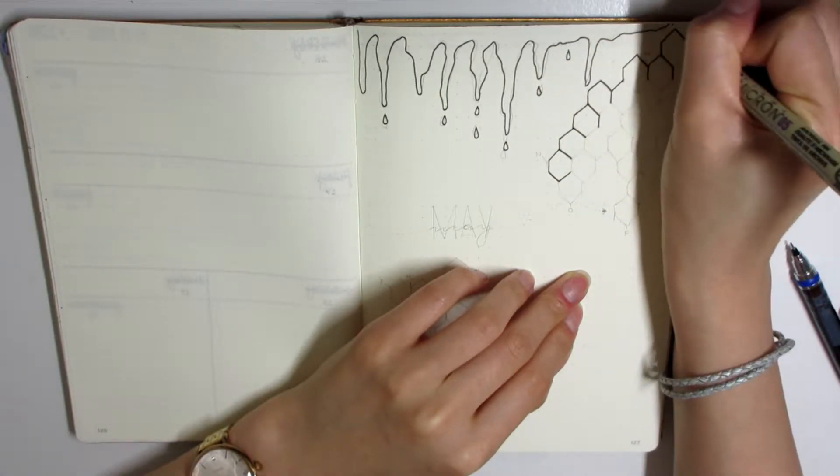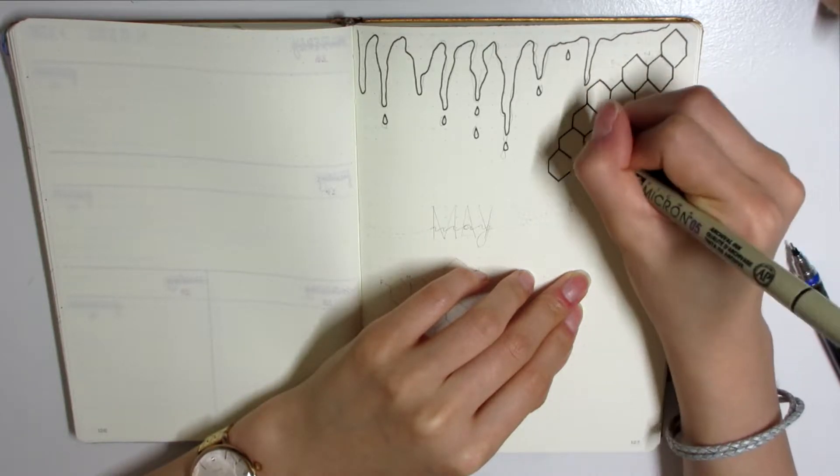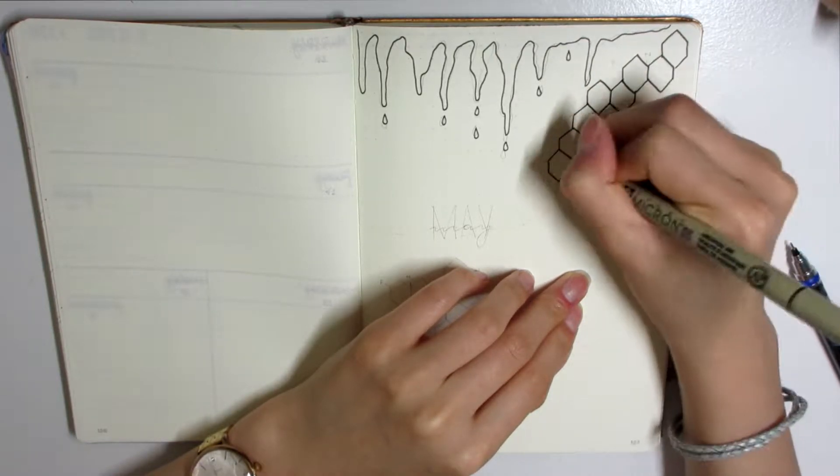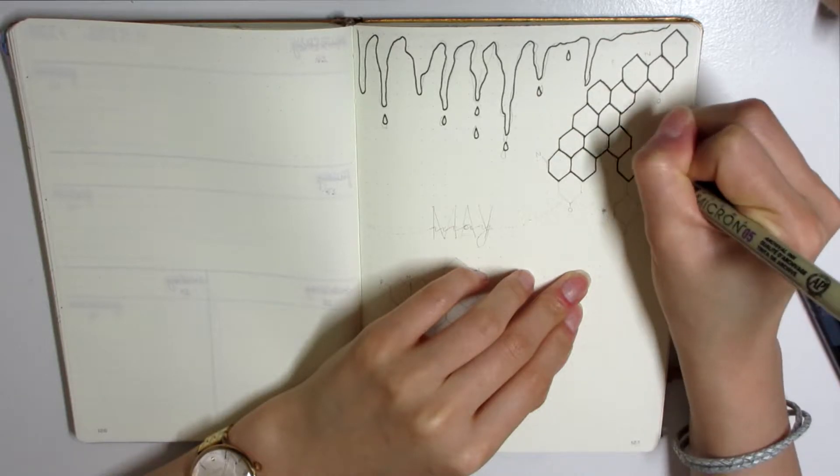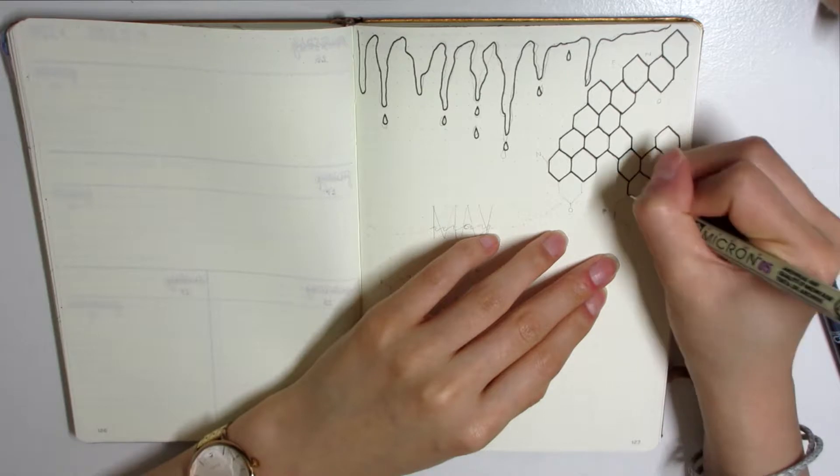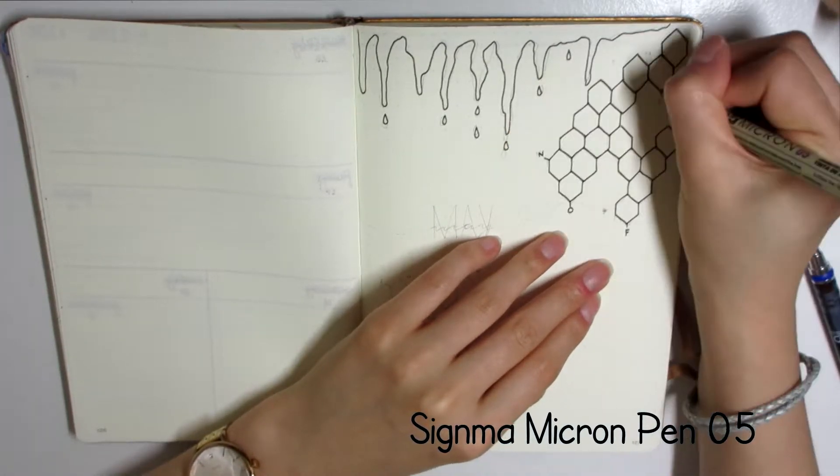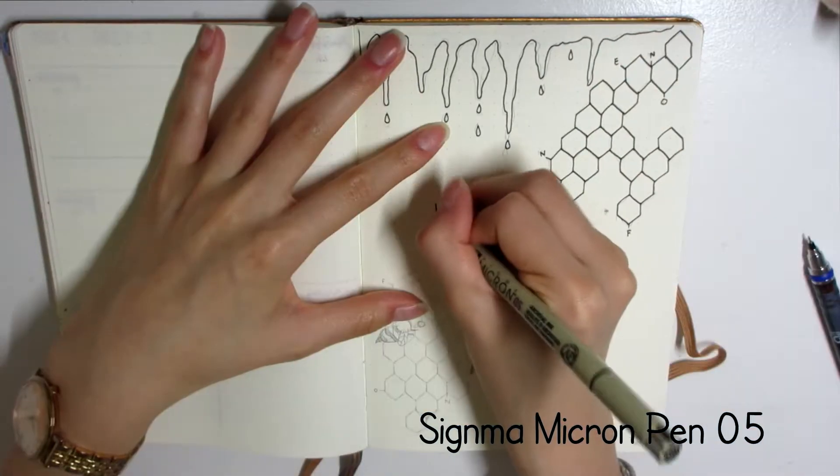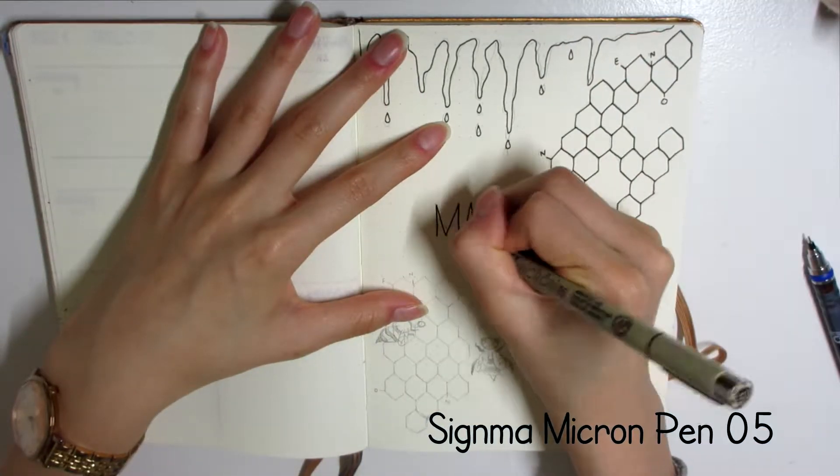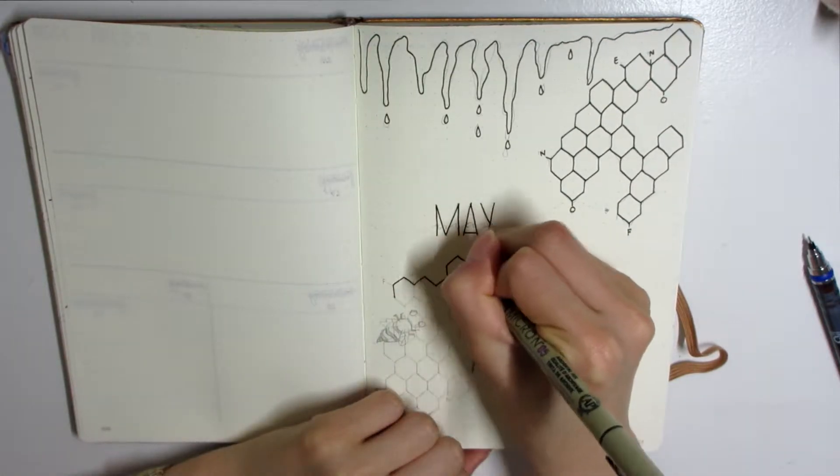As you can see, I'm going in with my Micron pen. Before I start, I will be linking everything that I am using down in the description box below. I'm using my Micron 05 version with the 0.45 millimeter tip to ink everything in the May cover page.